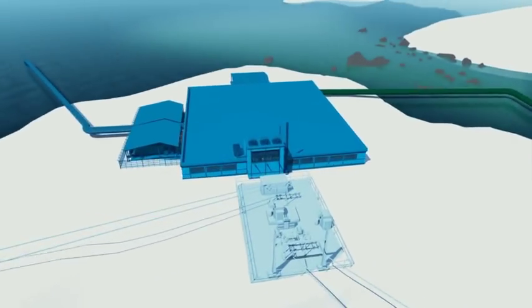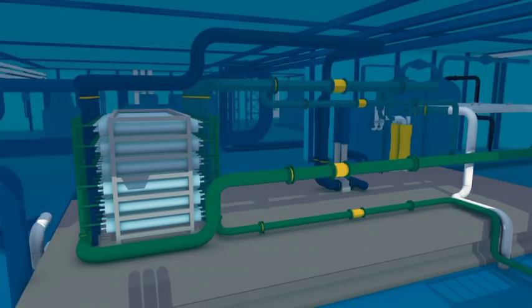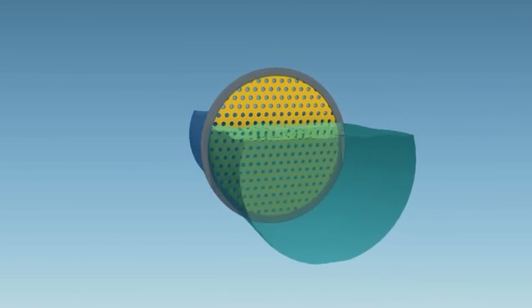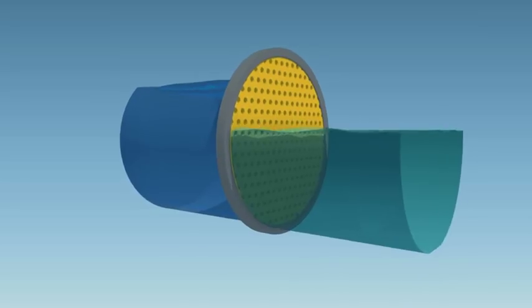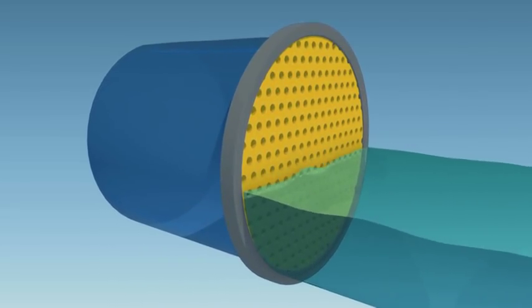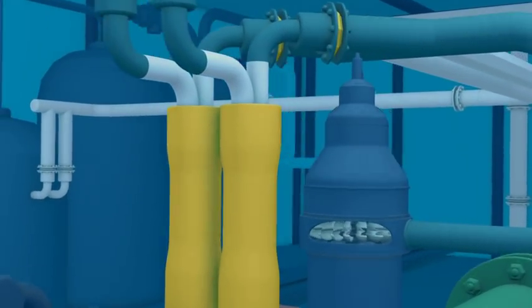Osmotic power is one example of a new promising energy source. Seawater and freshwater are separated by a membrane. The seawater draws the freshwater through the membrane, thereby increasing the pressure on the seawater side, corresponding to lifting the water 120 meters. The increased pressure can be used to run a turbine.